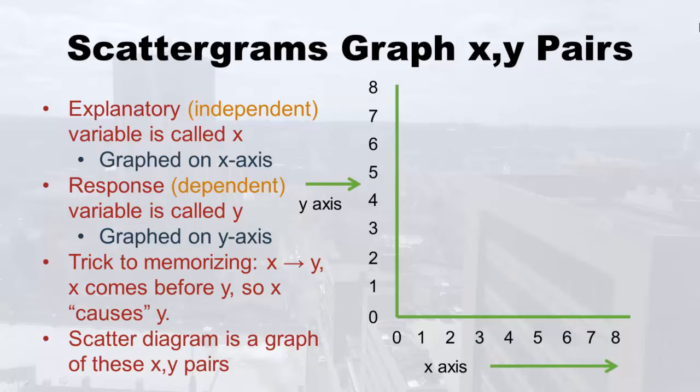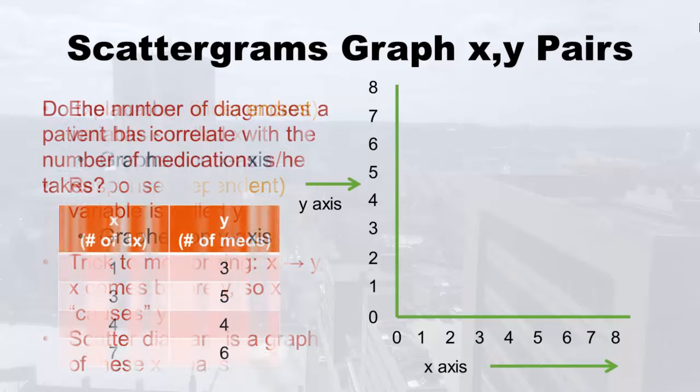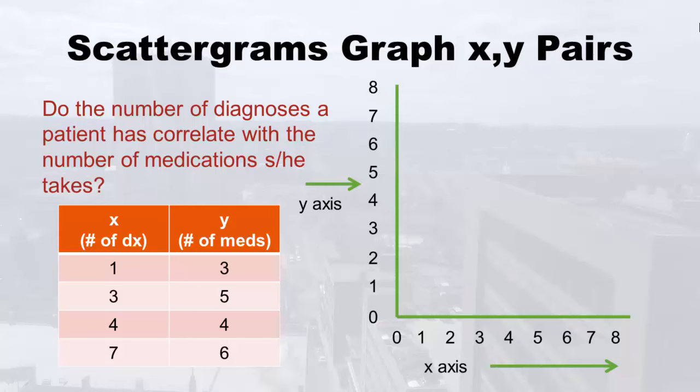That's a long way of saying the scattergram is a graph of x, y pairs — and that's what we're going to do: make that graph. So I asked the question: do the number of diagnoses a patient has correlate with the number of medications she or he takes?